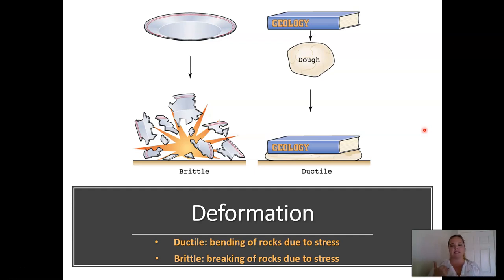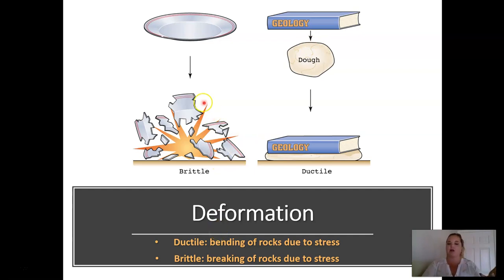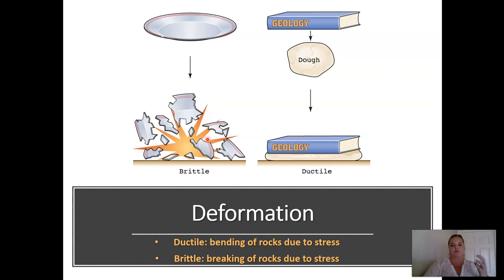Under that stress, the rocks can either bend or they can break. Depending on the rock composition and the type of stress they are under, it will experience a different type of accommodation to that stress. They're either going to bend to accommodate or break to accommodate. Ductile would be the bending — like putting Play-Doh between two geology textbooks. Brittle is the breaking of the rocks, which would be like dropping a plate. To remember the difference: brittle is like peanut brittle — when you drop it, it's going to break, it's not going to bend. Ductile would be like dough between two geology textbooks, so it bends.